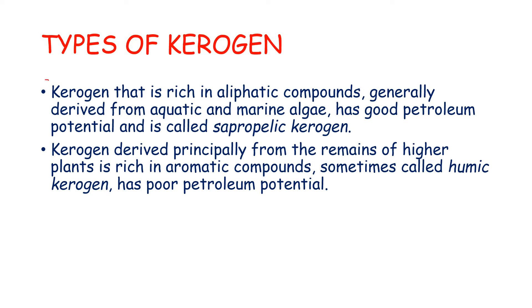Essentially, you have two types of kerogen. Those that are rich in aliphatic compounds, aliphatic here basically refers to light molecular weight compounds. They are usually mobile. These are generally derived from aquatic and marine algae. Therefore, it has good petroleum potential and is called sapropelic kerogen.